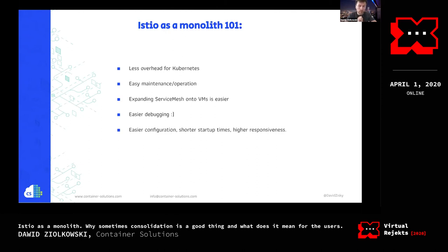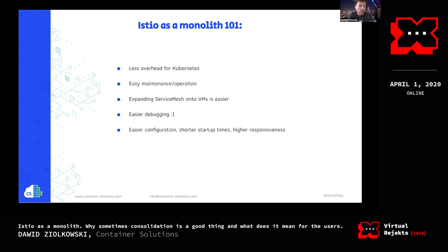First of all, there is much less overhead for communications. In the previous architecture, there were about six components that needed to be deployed in a specific order, all needed to be up and running, communicating with each other, and having the right privileges to talk to each other — which was quite a job for Kubernetes to manage. That doesn't happen now because we have one single binary. It doesn't need to talk to anything except the proxy. So it's way, way easier.